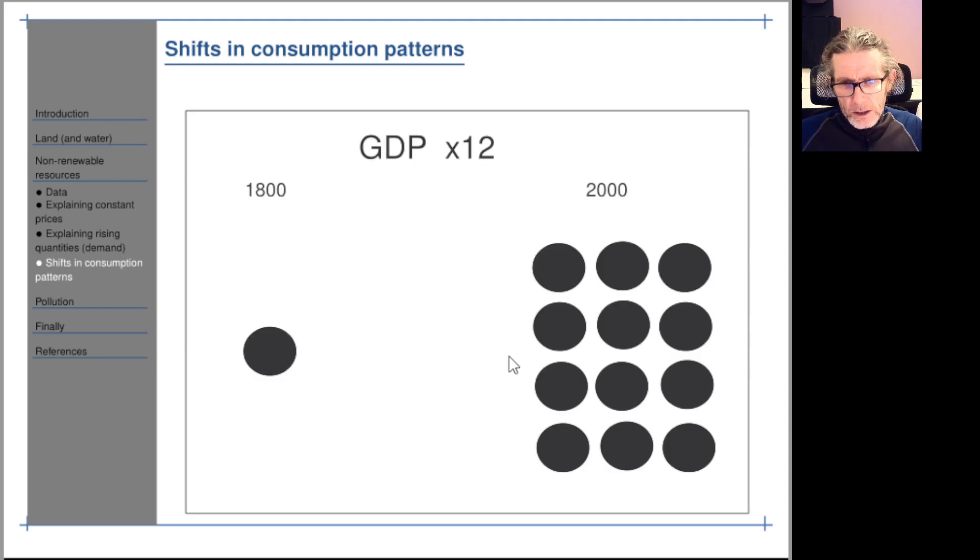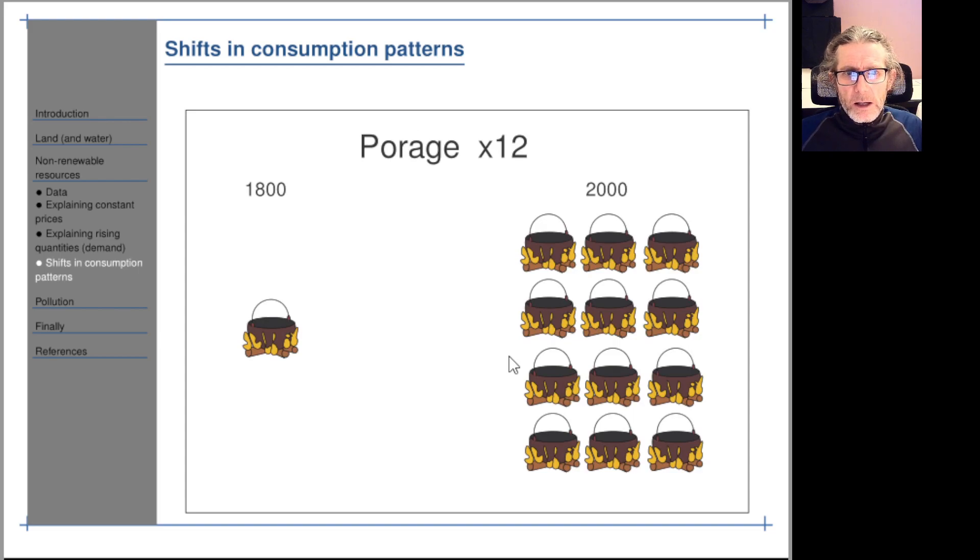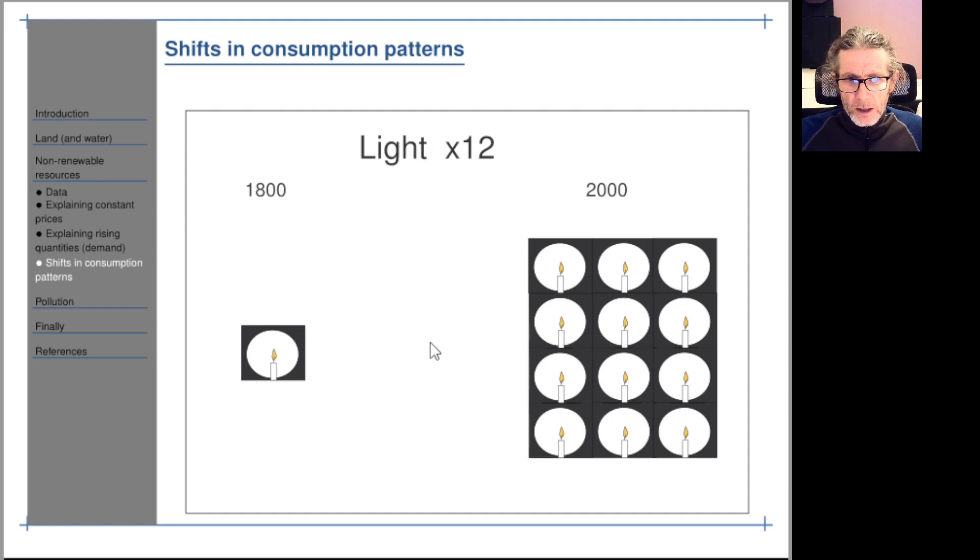This is GDP per capita from 1800 to the year 2000, times 12 in Sweden, very roughly. If there weren't any shifts in consumption patterns, we'd have spent more or less everything on porridge in 1800, so we'd all be eating like 12 times more porridge today than we were then. That's obviously nonsense. We're consuming less than 12 times more porridge and a lot more than 12 times more light.